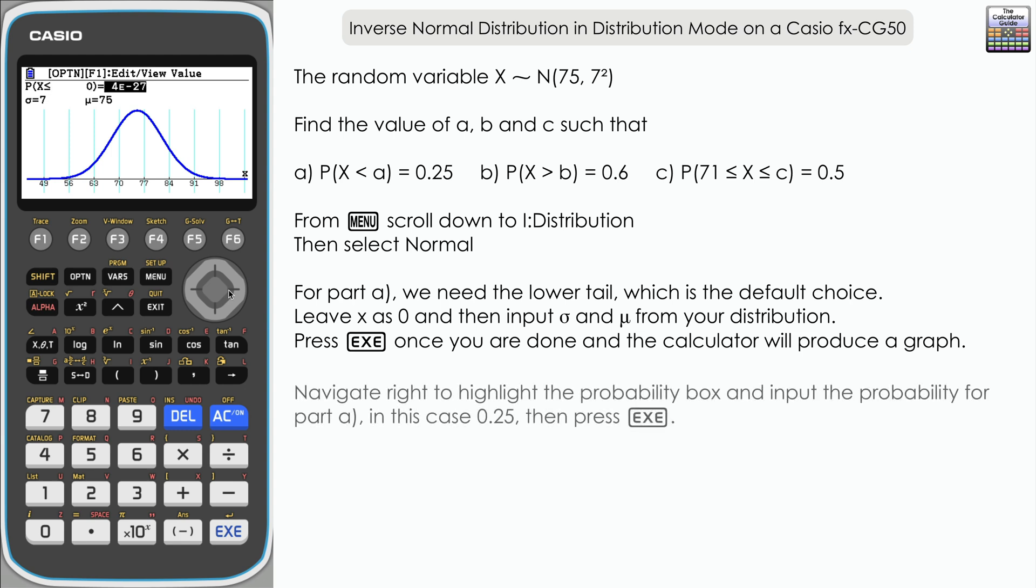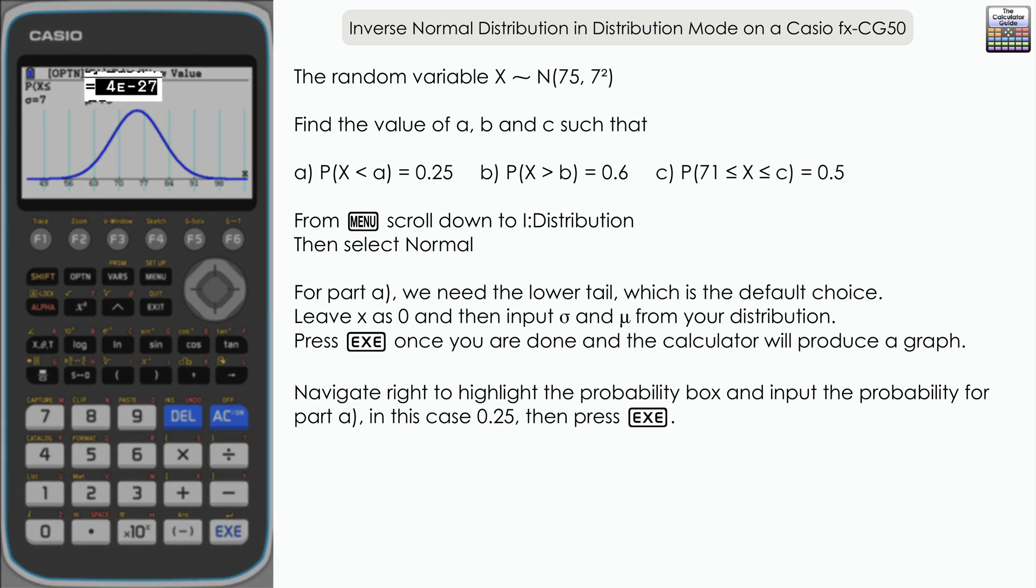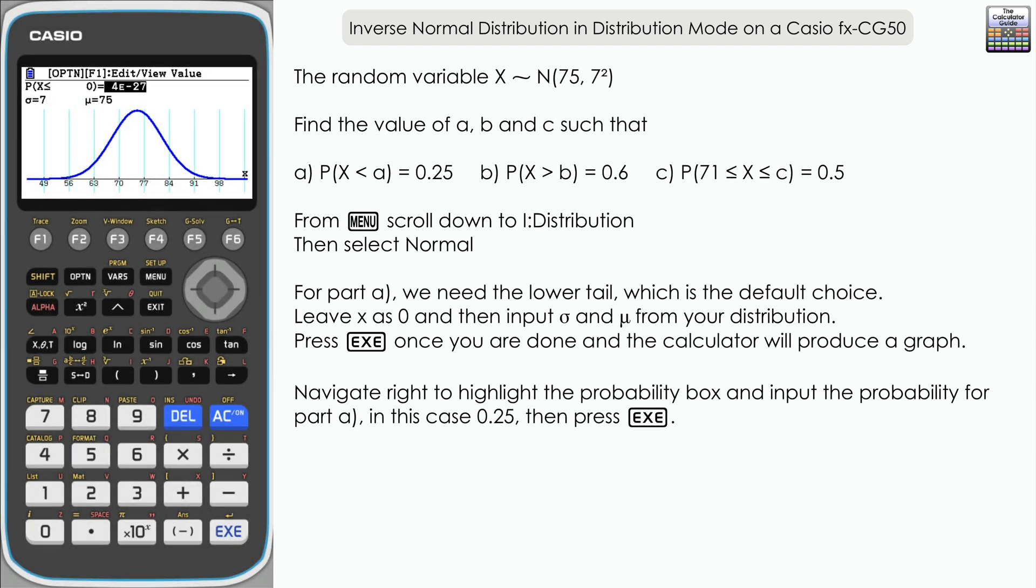What we need to do is navigate right so that we highlight the probability. Now we know this from the question—it is 0.25. So let's input that and press execute.